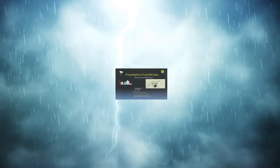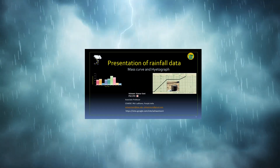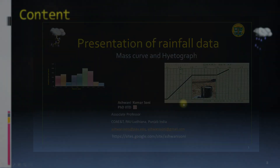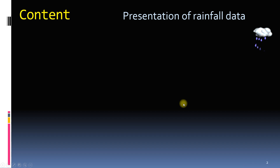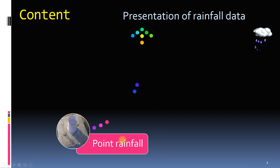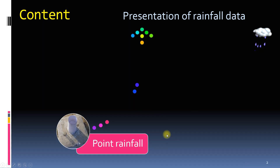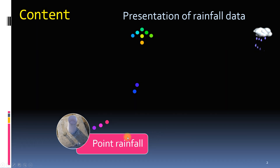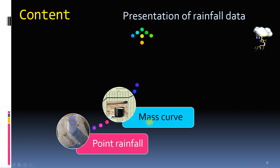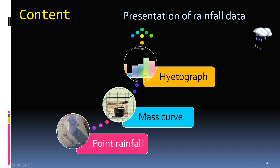Today, we are going to learn about presentation of rainfall data. Rainfall data observed by non-recording rain gauges is called point rainfall. Most rainfall data is collected in this fashion, so this will be our first topic. Secondly, we will study the mass curve of rainfall, which is produced by recording rain gauges. We will also develop a bar graph called hydrograph from the mass curve of rainfall.